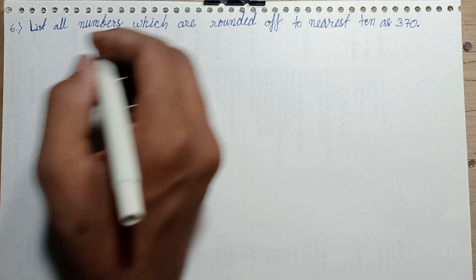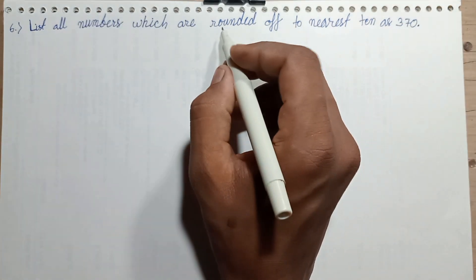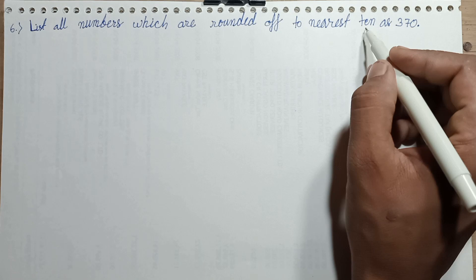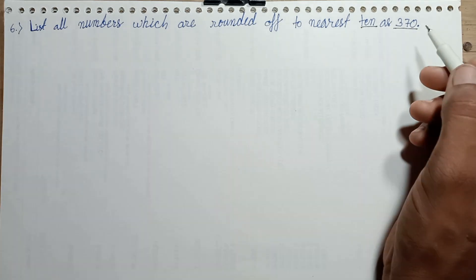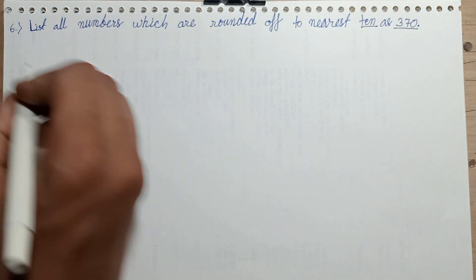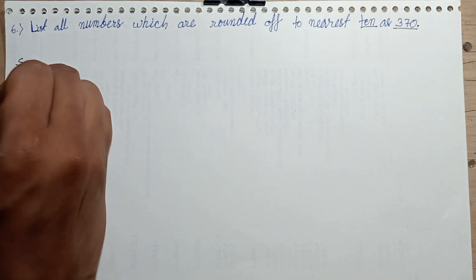List all numbers which are rounded off to nearest 10 as 370. Let's solve this question.